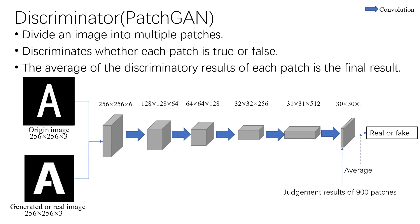The discriminator will discriminate the generated image from the real image and whether it corresponds to the origin image. About the discriminator, we use a technique named PatchGAN, which has five convolutional layers. The PatchGAN will divide an image into multiple patches and discriminate whether each patch is true or false. The average of the discriminatory results of each patch is the final result.